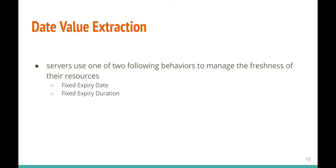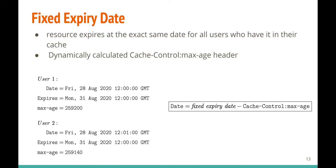For date value extraction, servers use one of two behaviors to manage resource freshness: fixed expiry date or fixed expiry duration. With fixed expiry date, two requests made one minute apart are reflected in the max-age directive — the 60-second difference is directly visible in the max-age for user 2. Since users don't all visit at the exact same second, max-age can differentiate users. Once the attacker knows the fixed expiry date, they calculate the cached time using: date = fixed_expiry_date − max-age.